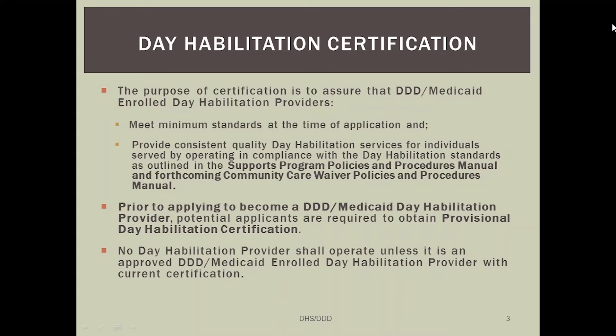Prior to applying to become a DDD Medicaid provider, all potential applicants must obtain the provisional day habilitation certification. We have had several applicants come through Medicaid who did not submit this certification, so you will not be able to move forward until you first come through this process. This basically means that you have met the minimum standards to provide this service. There is no day habilitation provider that can operate unless it has been approved through this process and has a current certification. In addition to provisional certification, there is also an ongoing certification process that all day habilitation providers must obtain and maintain.